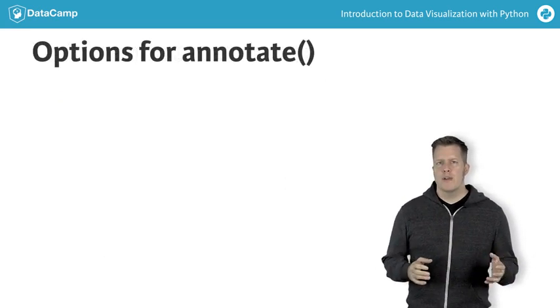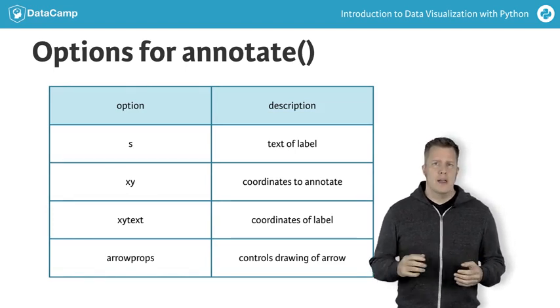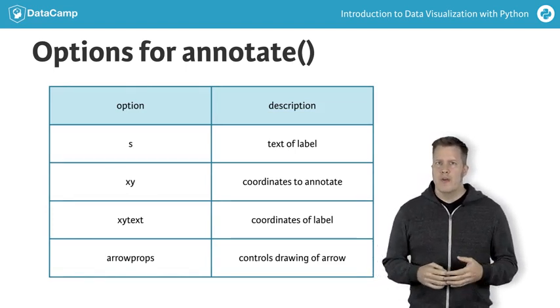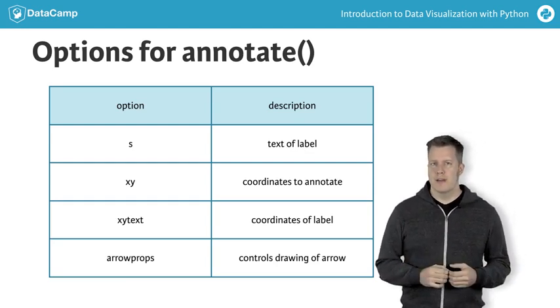The annotate function requires at least the string argument s for the text to draw. The keyword argument xy tells the point being annotated. If we also want to draw an arrow, we need to specify the coordinates xy text of the text and the point being annotated.